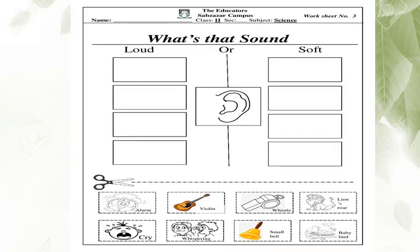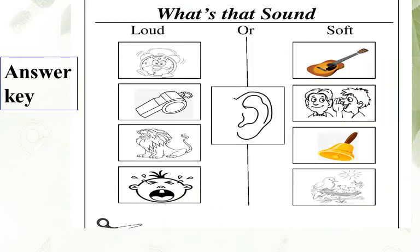Now the second row: the first is a baby crying — that's a very loud sound. Next, they are whispering — it's a soft sound. Next is a small bell — it produces a very soft sound. The last picture shows baby birds chirping — they also produce a very soft sound. Now cut the pictures and paste them according to their sounds — loud or soft — in the next box. There is an answer key for you — match your answers with my answers.